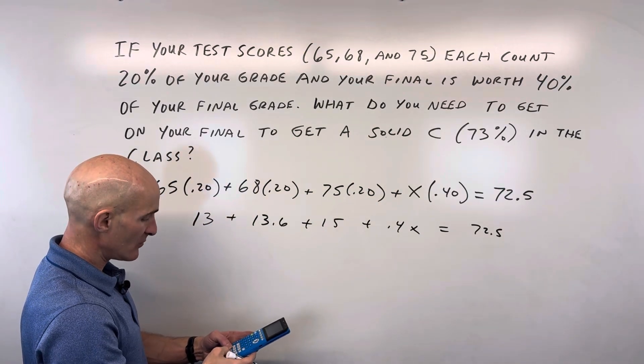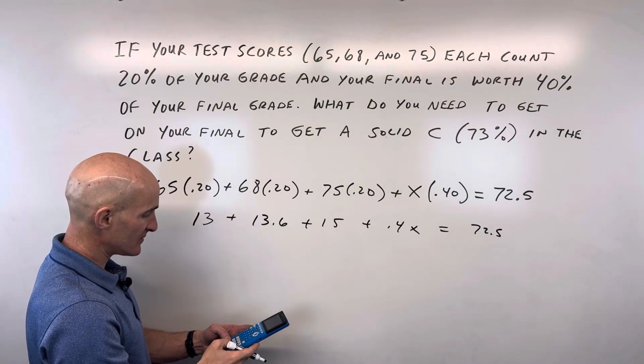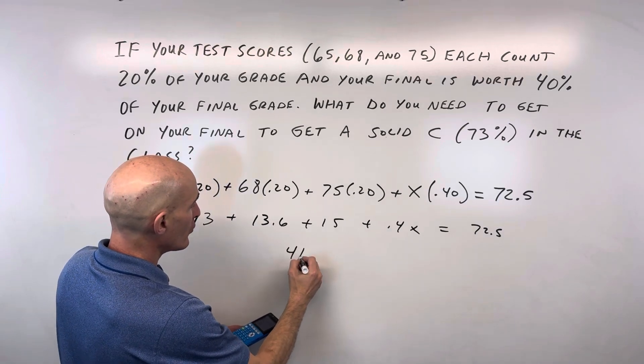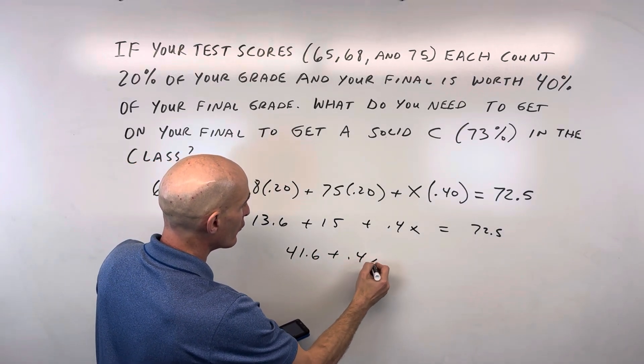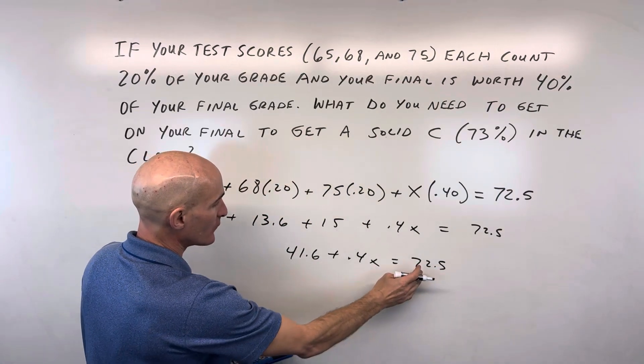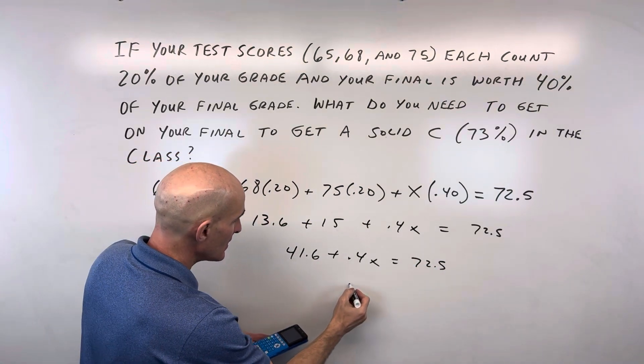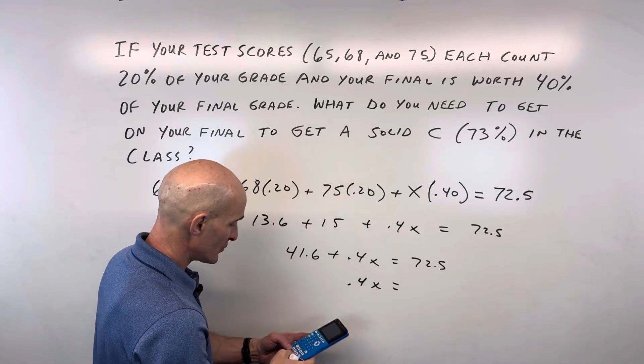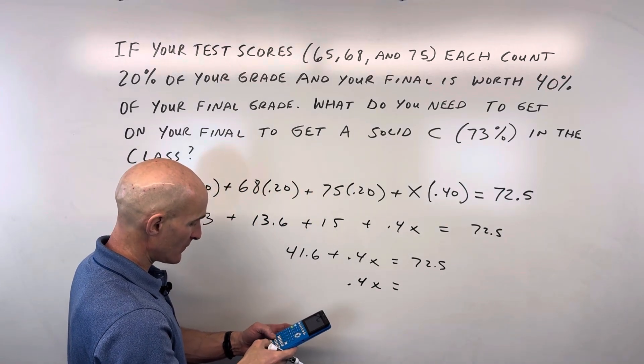Combining like terms, 13 plus 13.6 plus 15, we're at 41.6 plus 0.4X equals 72.5. We're going to subtract 41.6 from both sides. So 0.4X equals 72.5 minus 41.6.